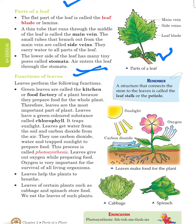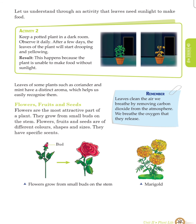Leaves help the plant to breathe. Leaves of certain plants such as cabbage and spinach store food; we eat the leaves of such plants. Activity 2: Keep a potted plant in a dark room. Observe it daily. After a few days, the leaves of the plant will start dropping and yellowing. This happens because the plant is unable to make food without sunlight. Leaves of some plants such as coriander and mint have a distinct aroma which helps us easily recognize them.